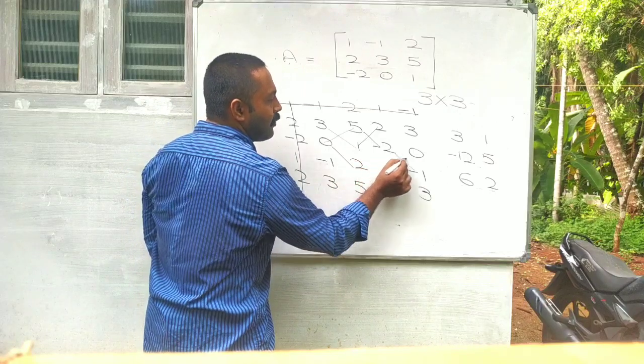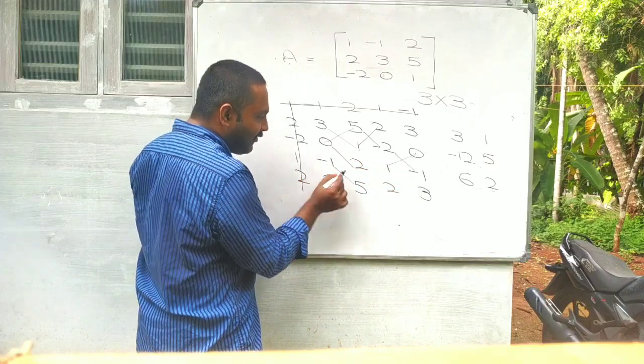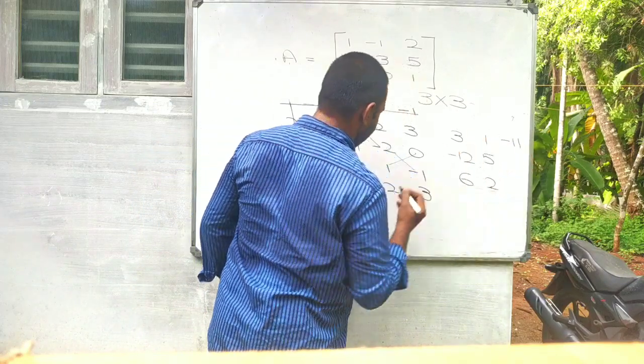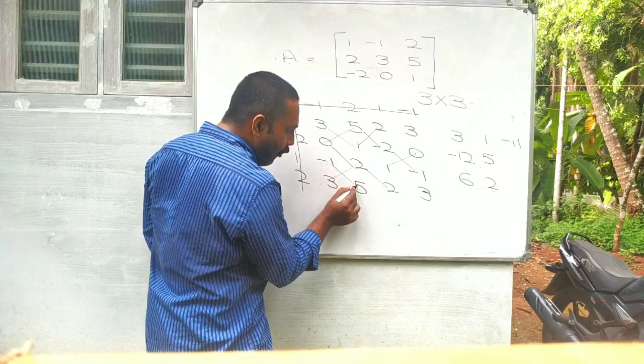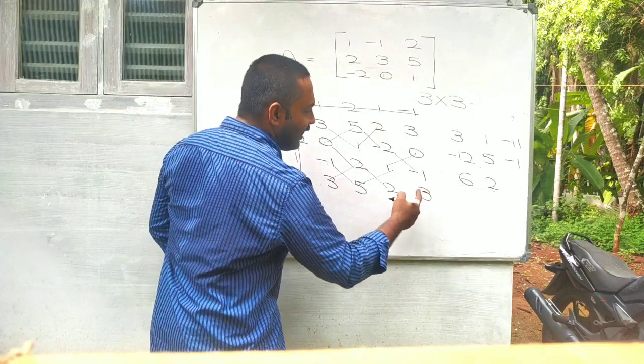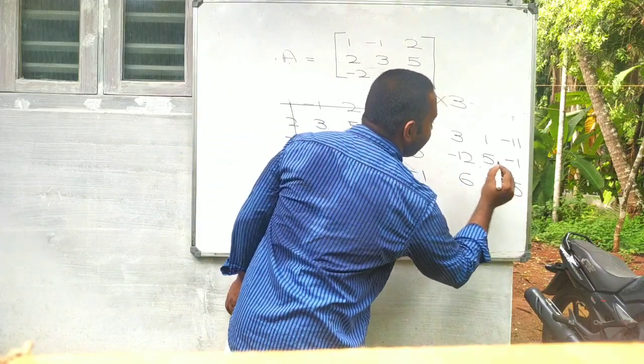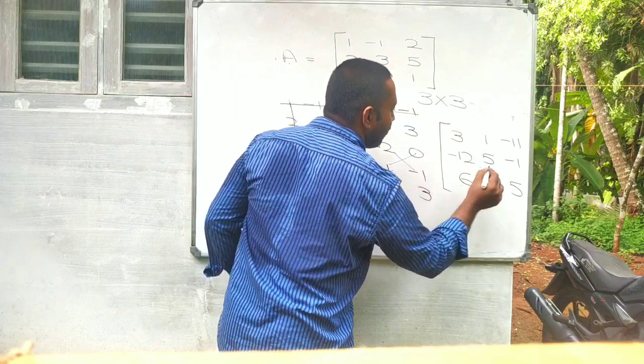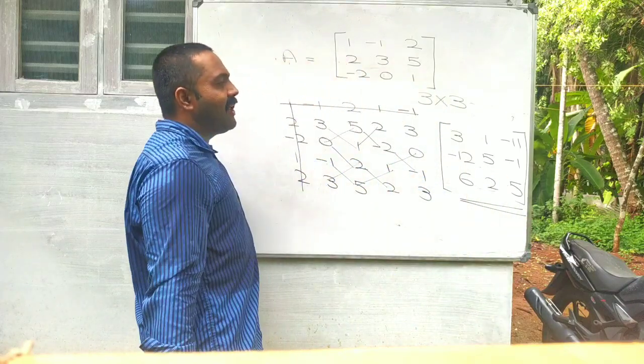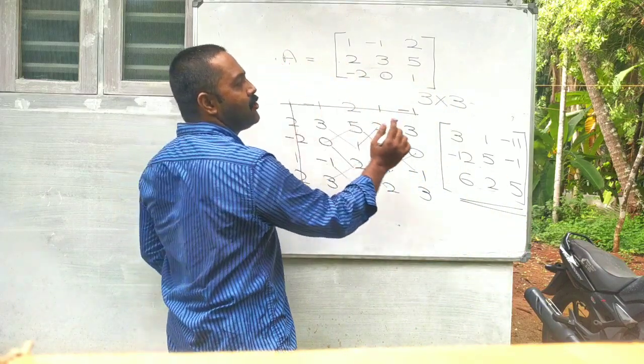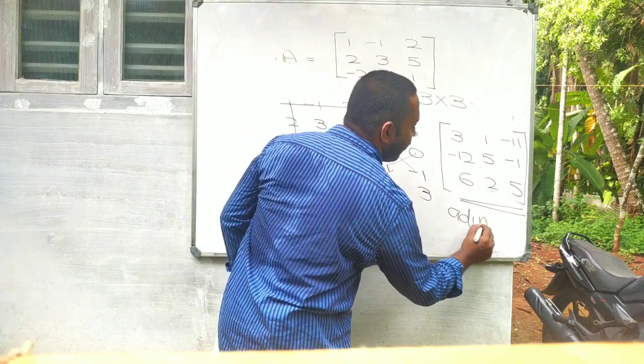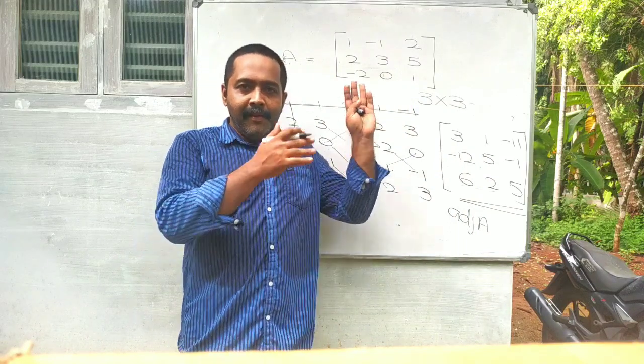2 minus 0, 2. Minus 5, minus 6, minus 11. Okay. 4, 4 minus 5, minus 1. 3, 3 plus 2, 5. This is our adjoint. More less than adjoint. Clear? Make a note.